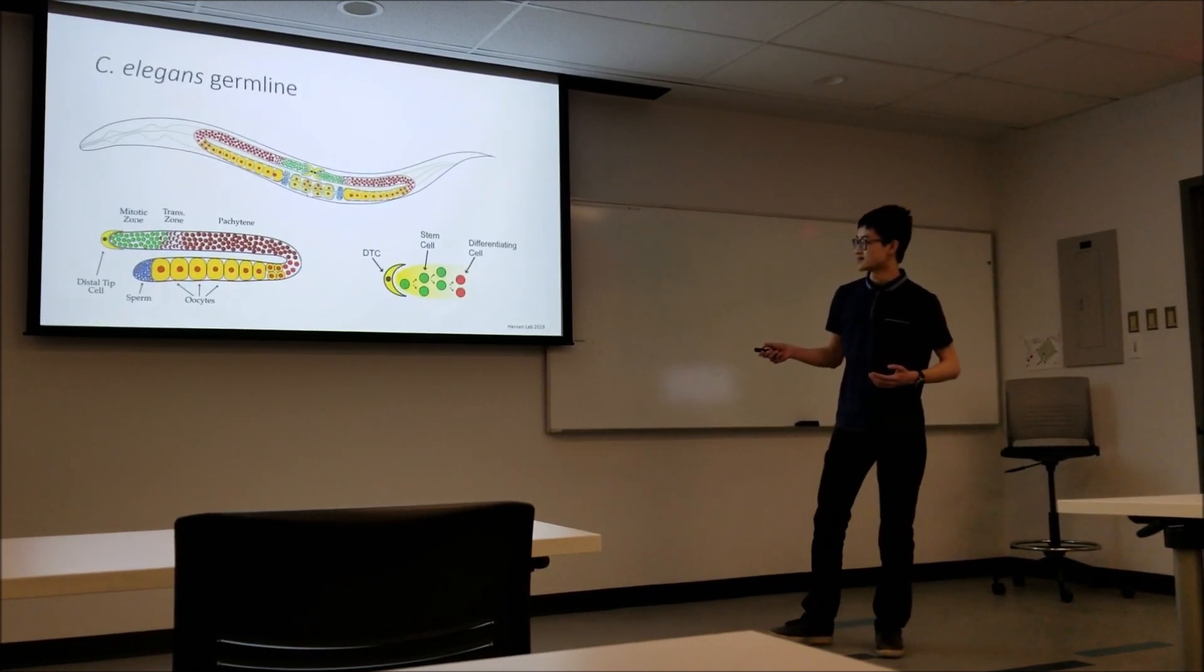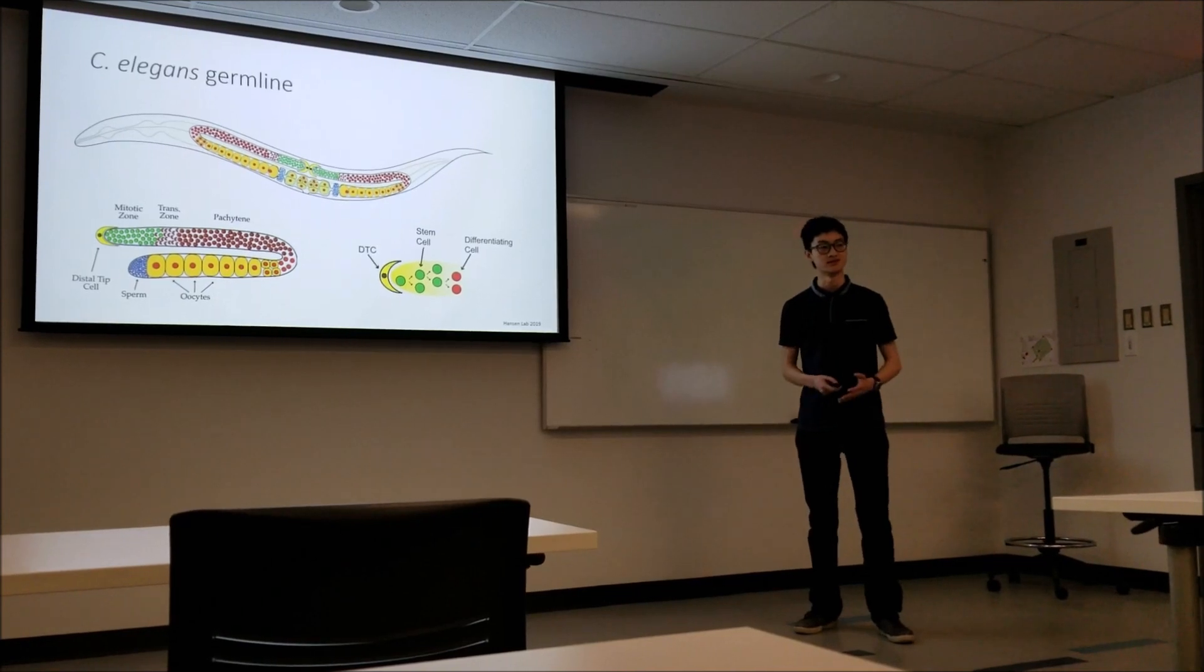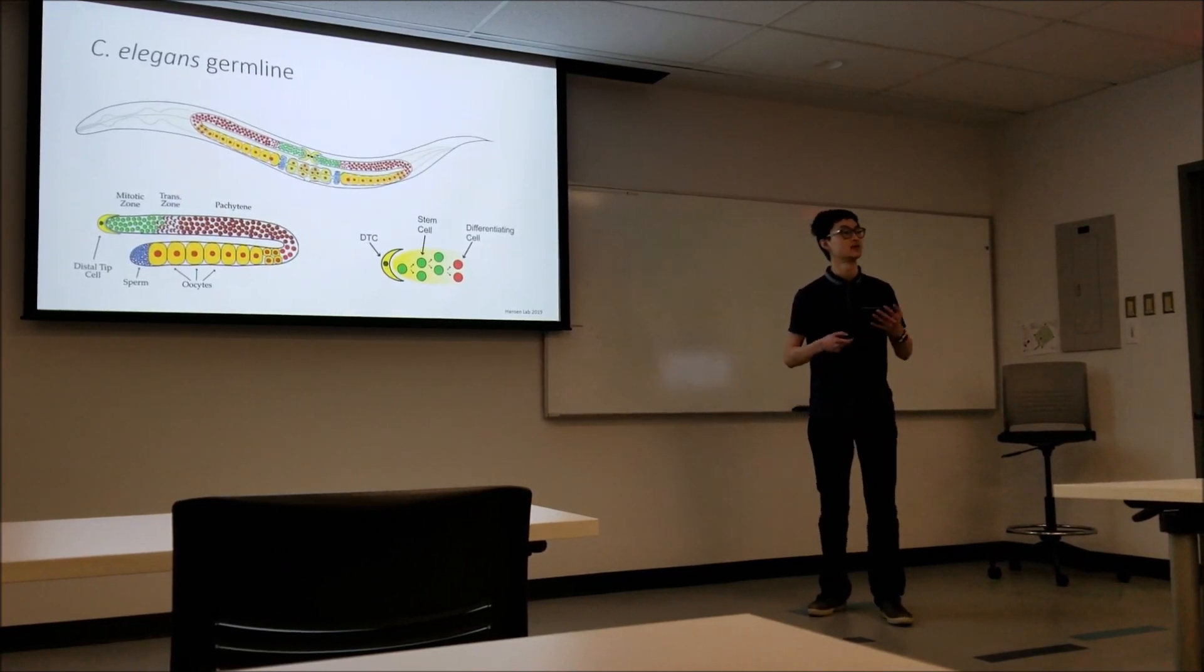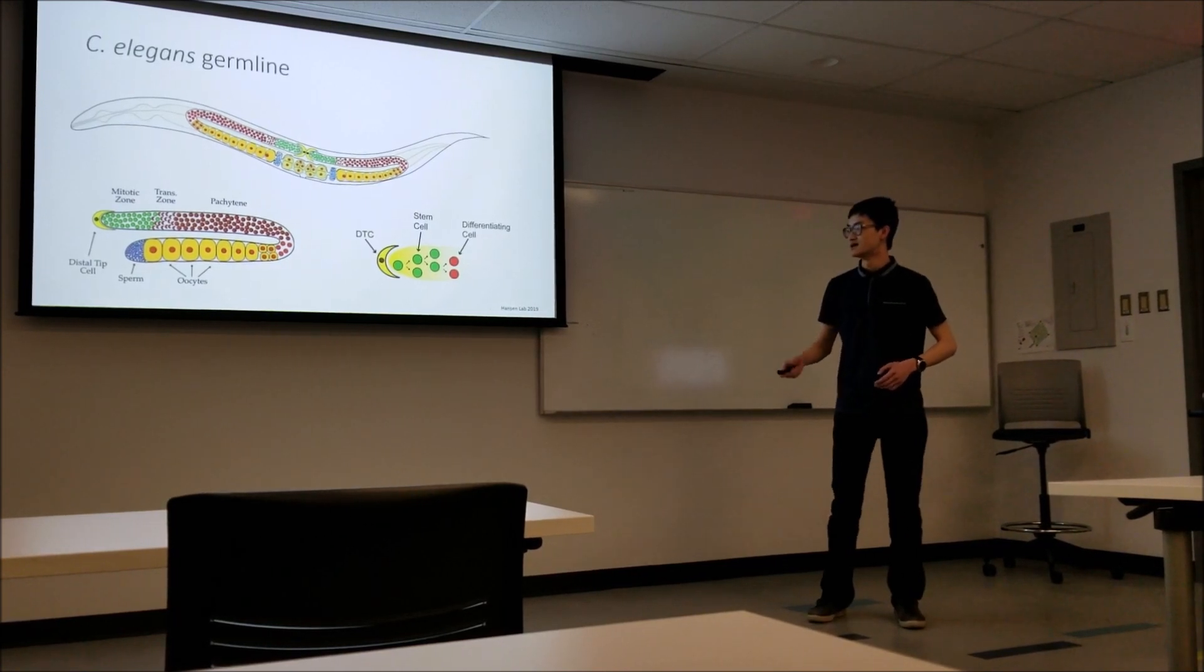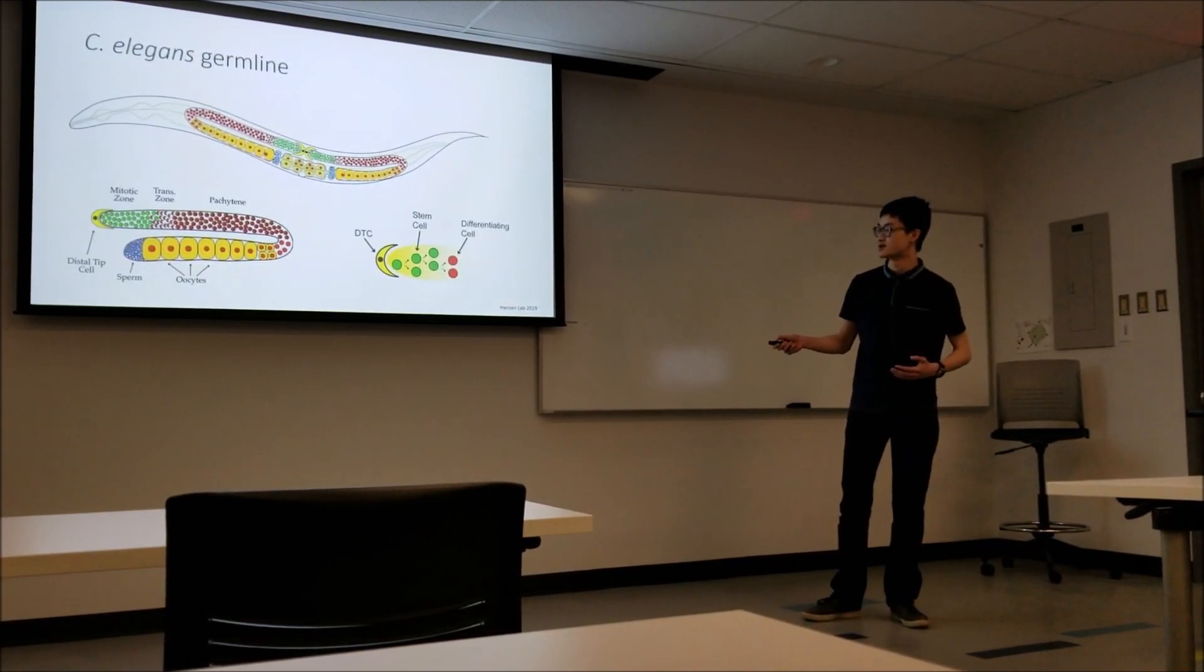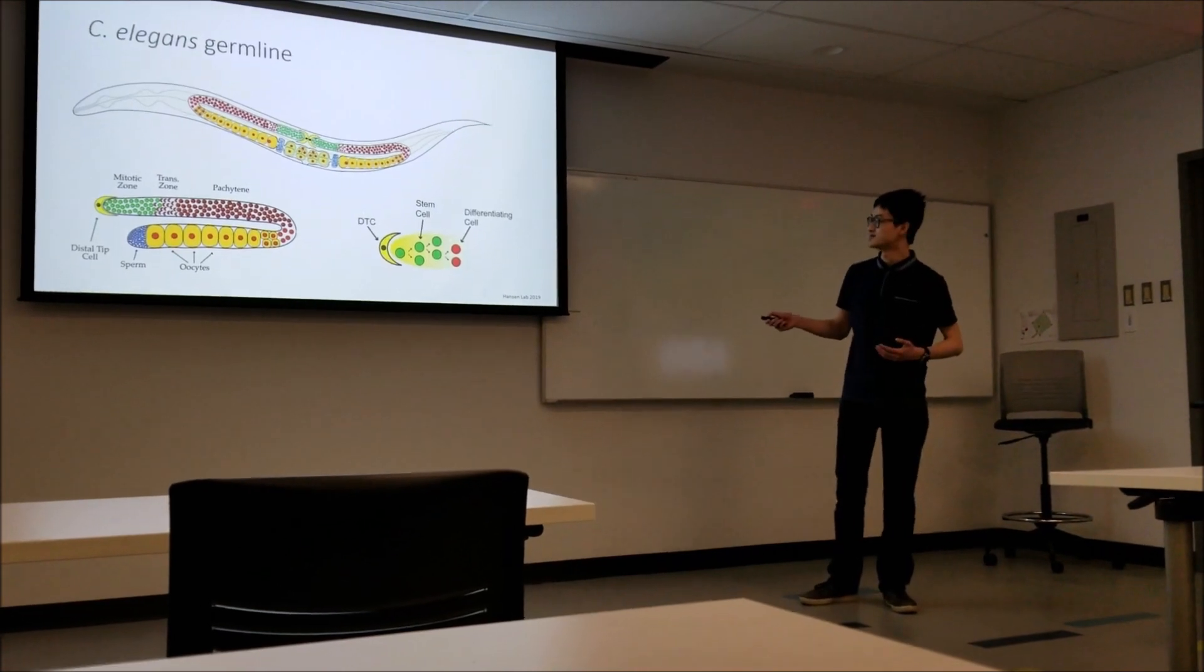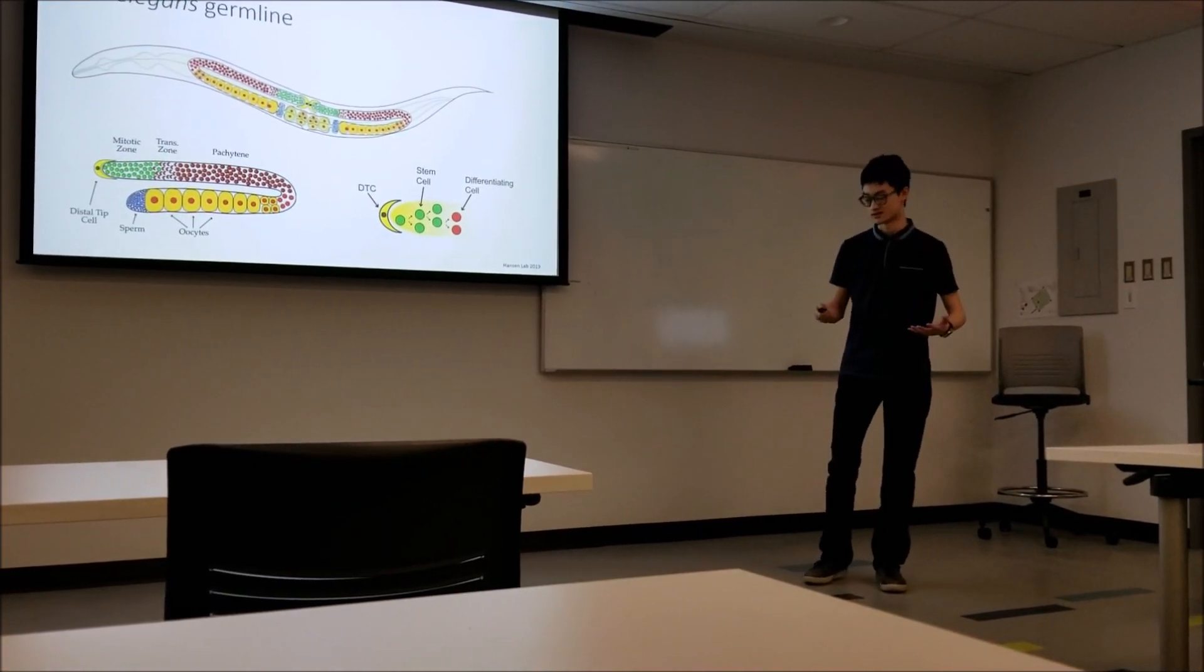Here at the distal end, these green circles are your stem cells, your mitotic pool of stem cells, and they're maintained by this yellow thing called the distal tip cell. The distal tip cell is giving some sort of signal to tell those nearby cells to stay as stem cells. As you move away from that, you get this gradient of differentiation. By the proximal end here, you've got differentiated cells, sperm and oocytes.